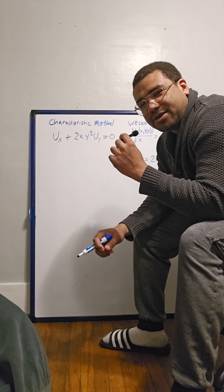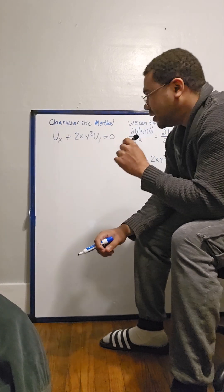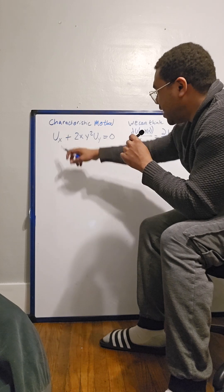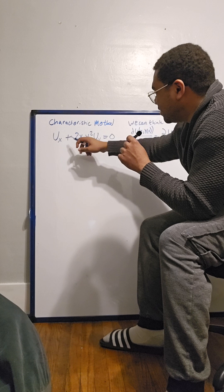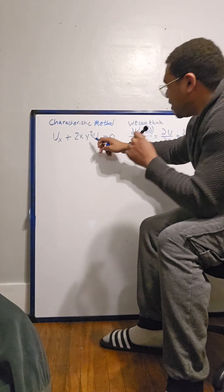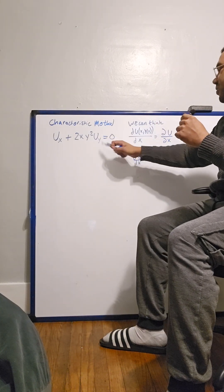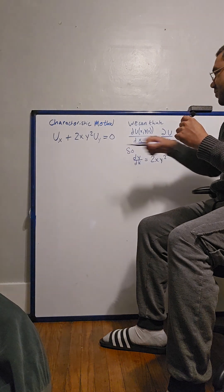Okay, today we have another partial differential equation, a linear one. First we have partial u with respect to x, 2xy squared times partial u with respect to y equals zero.